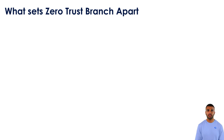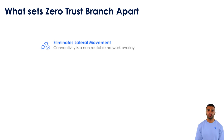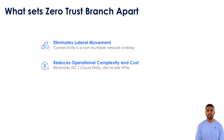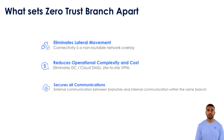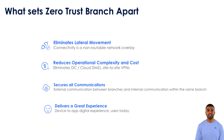Traditional branch networks are vulnerable to lateral movement by attackers once they gain access. Zero Trust Branch prevents this using a non-routable network overlay, meaning connections between devices and segments are isolated and cannot be used by attackers to move laterally. Zero Trust Branch also simplifies network architecture by eliminating costly site-to-site VPNs, cutting operational expenses and speeding up deployment. Security is applied uniformly to all communication flows — both external communication between branches and internal communication within the same branch — closing gaps that could otherwise be exploited. Zero Trust Branch provides a seamless experience from device to application, ensuring users get fast, secure access to the resources they need wherever they are.